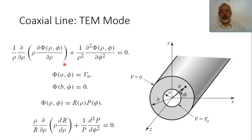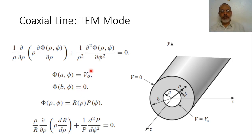We solve this Laplace equation using separation of variables. The potential function φ as a function of ρ and φ is represented as a product R(ρ) · Φ(φ). The derivative with respect to ρ will act only on R, while the derivative with respect to φ will act only on Φ.